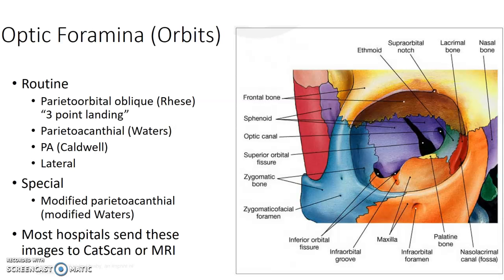Orbits. We don't do orbits often at the main hospital, but some of your off-sites might do a good amount of orbits as well. Most hospitals send orbit patients to CT or MRI, but this may come in. So we do a Waters, a Caldwell, a lateral, and then this three-point landing, which is also called the Reese method. There's also a modified Waters as well for orbits.